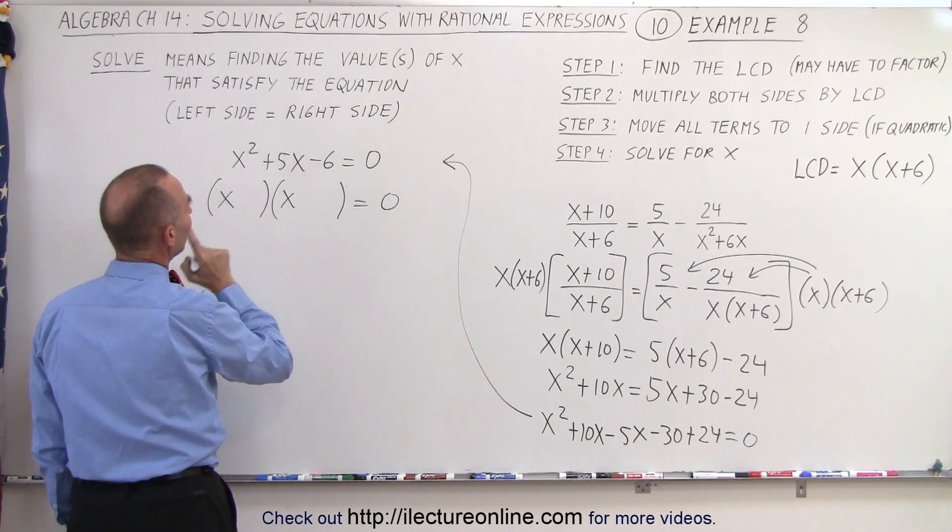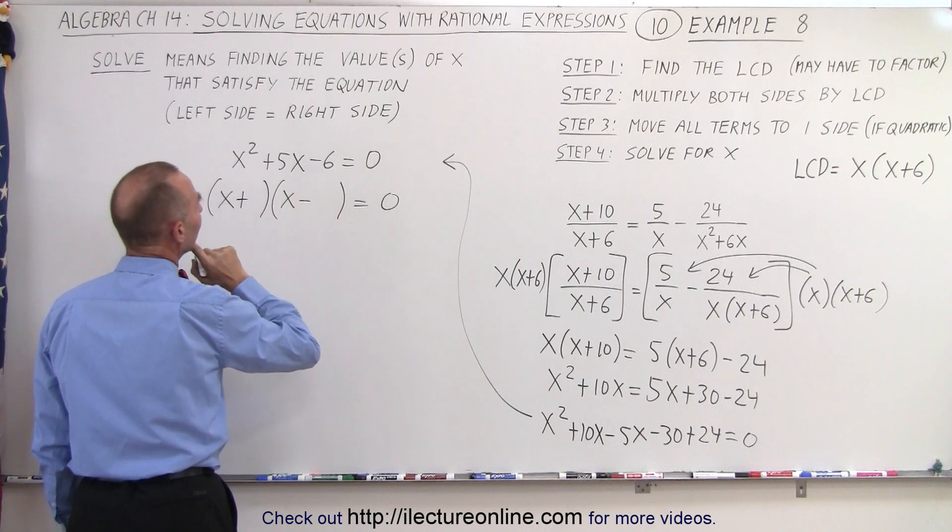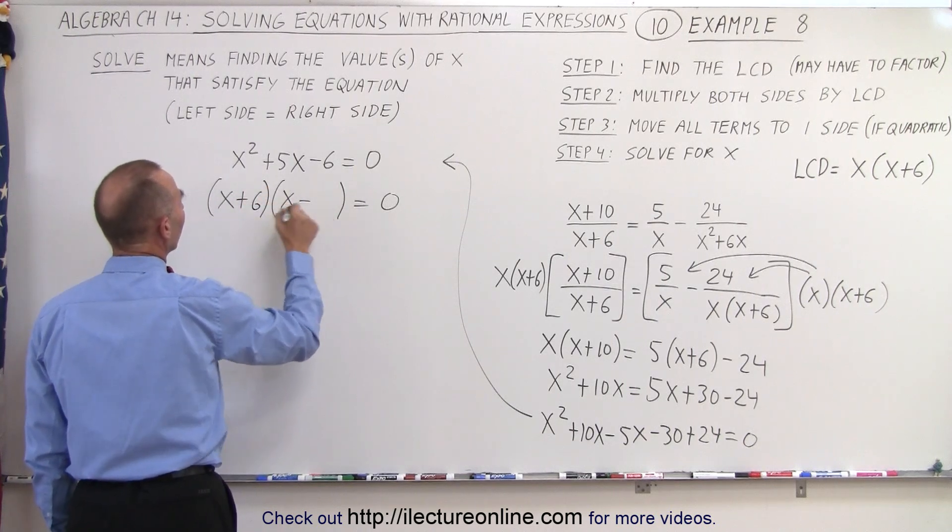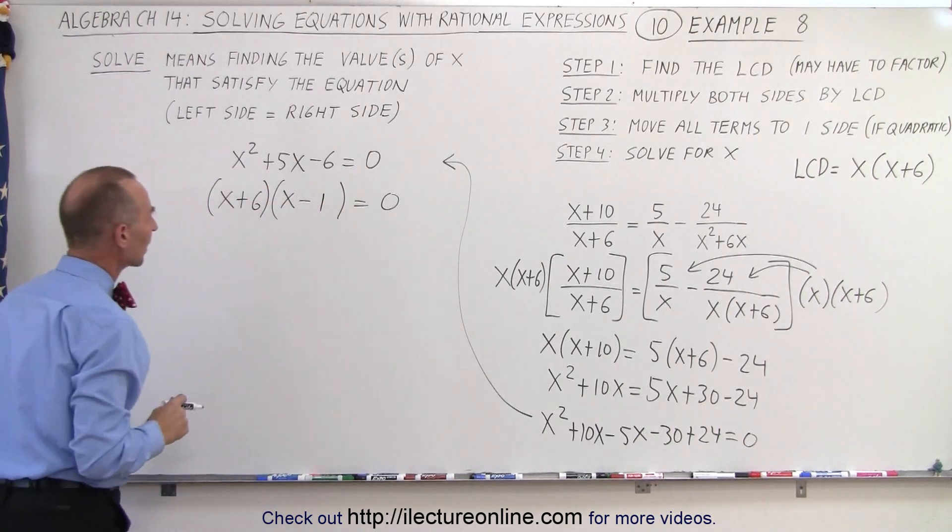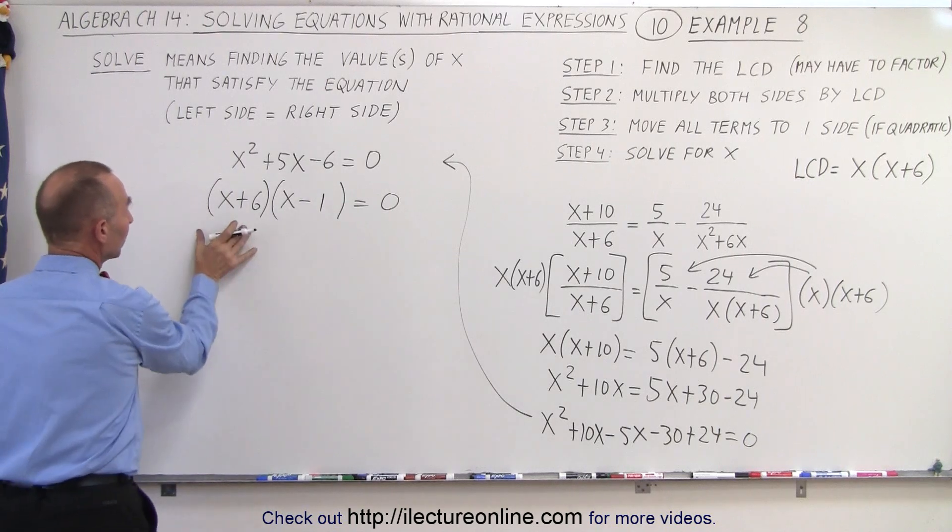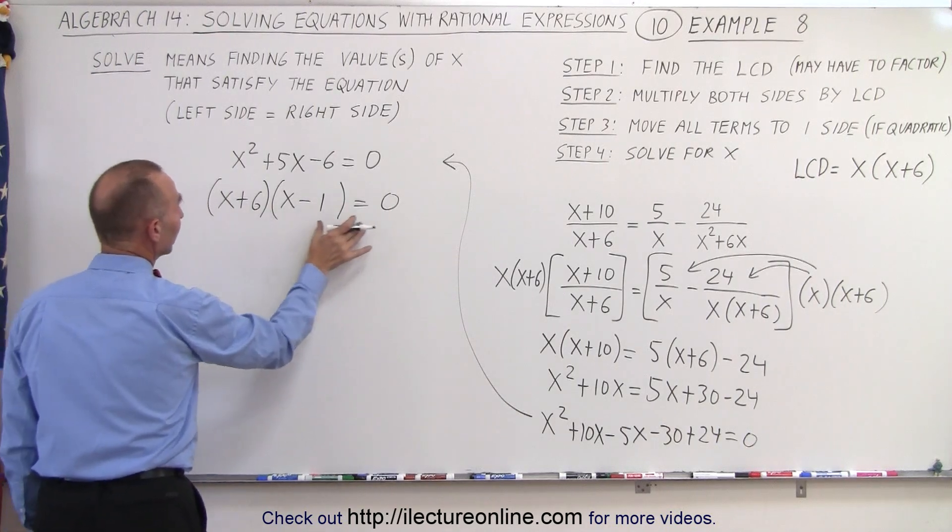We have an x and an x. We have a negative here and a positive there, that means we need a plus and a minus. And how about a +6 and a -1? Which means that if we multiply two binomials together and we get zero...